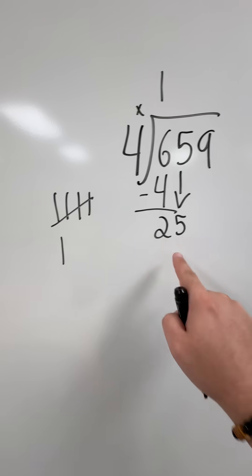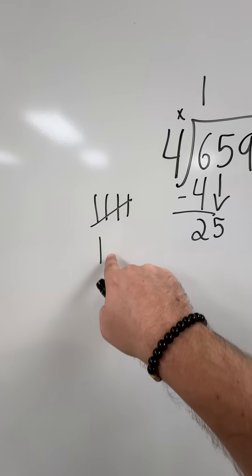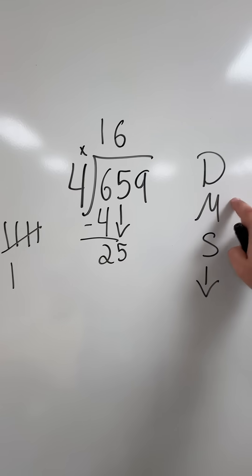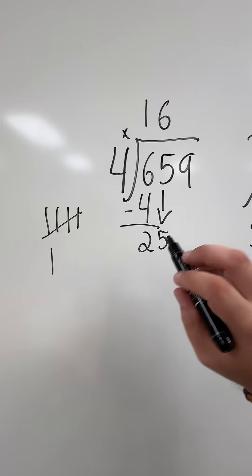So it only goes in 6 times. I put the 6 above my 5. My next step, multiply. 6 times 4 is 24.